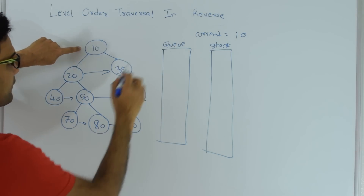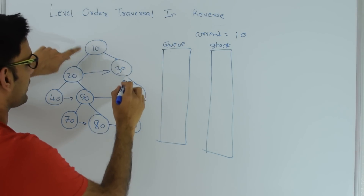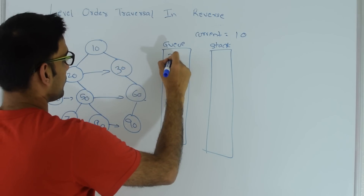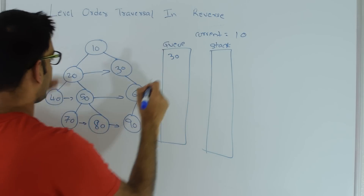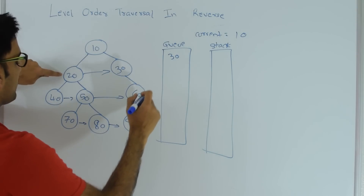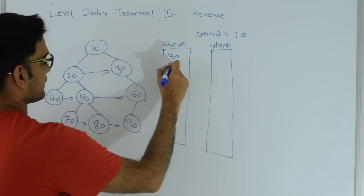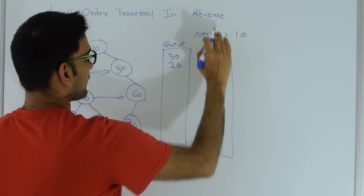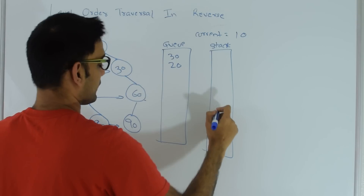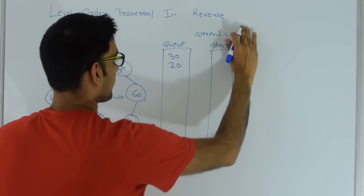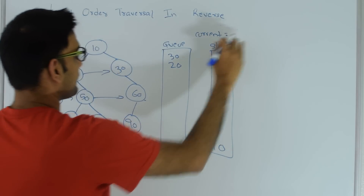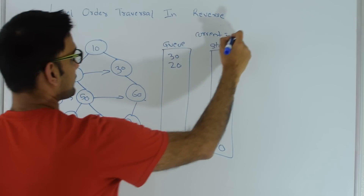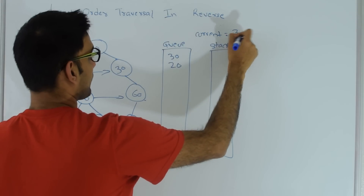First I check if current has a right child — 10 does, so I push that into the queue. Then I check if current has a left child — it does, so I push that into the queue as well. Then I push current (10) into the stack. Then I again pop from the top of the queue so that 30 comes out.